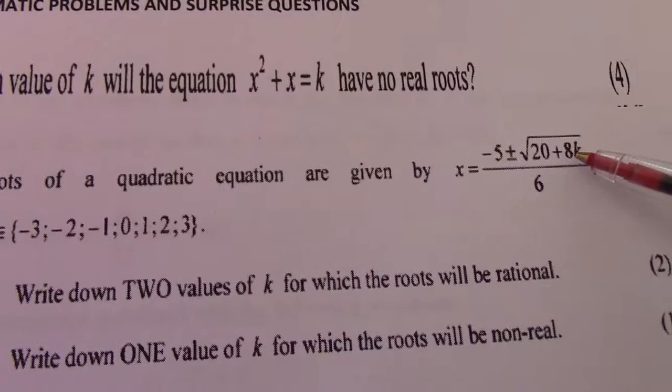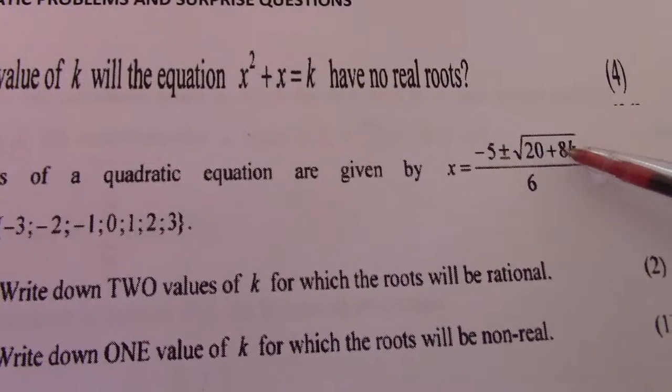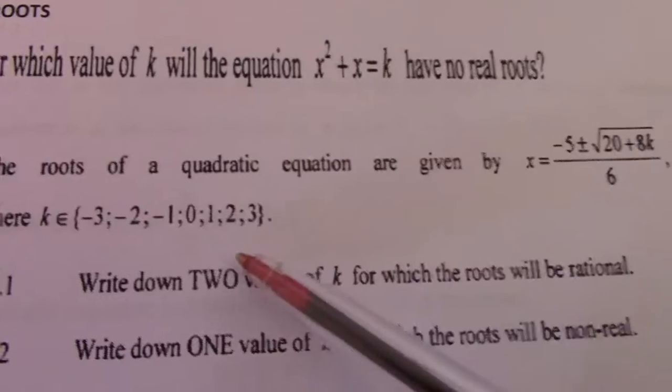Put in minus 2, that 8 times negative 2 gives me negative 16, 20 minus 16, positive value.